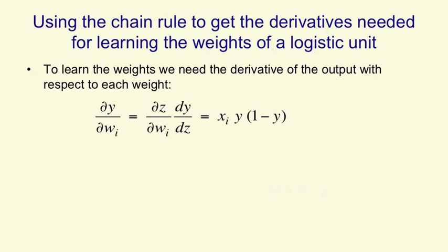And dz by dw, as we just saw, is xi. dy by dz is y times 1 minus y.